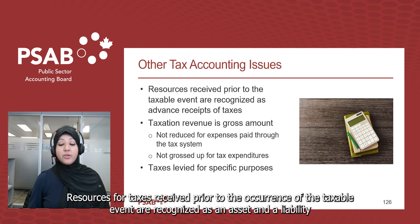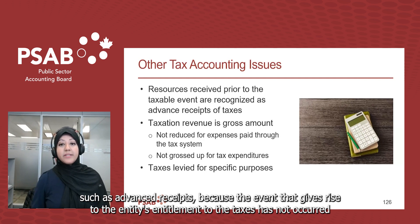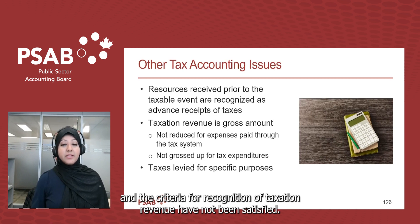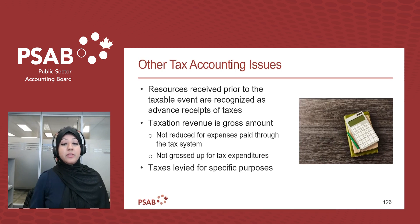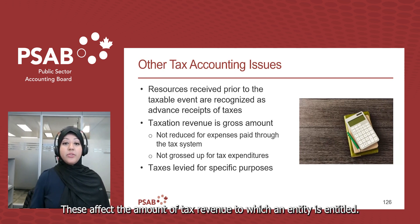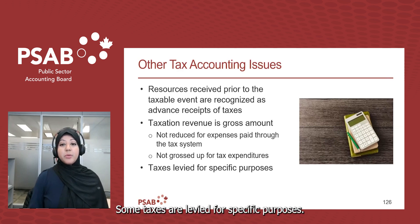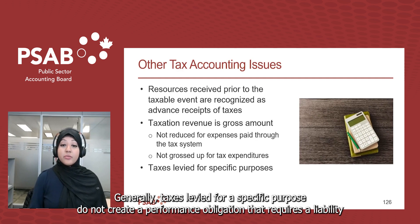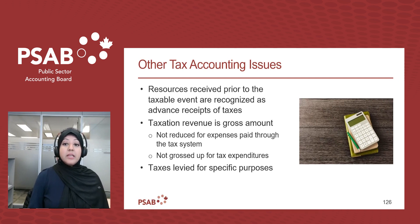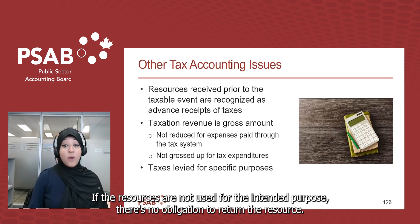Resources for taxes received prior to the occurrence of the taxable event are recognized as an asset and a liability, such as advanced receipts, because the event giving rise to the entity's entitlement has not yet occurred. Taxation revenue shall be determined at a gross amount. Tax expenditures are preferential provisions of tax law that provide certain taxpayers with concessions not available to others. Generally, taxes levied for a specific purpose do not create a performance obligation requiring a liability to be recognized, because the specific purposes amount to restrictions on how resources are used — the entity retains discretion, and if resources are not used for the intended purpose, there is no obligation to return them.